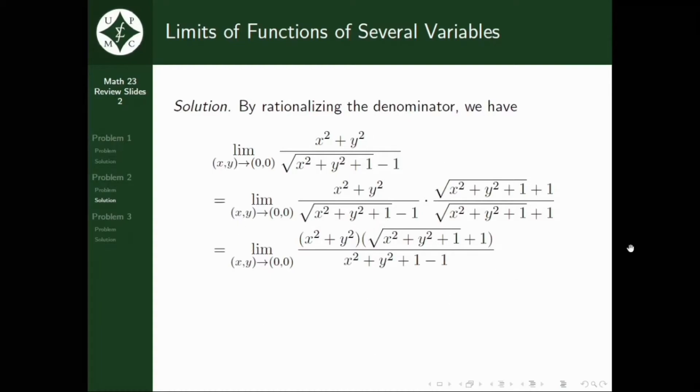So, by simplifying further, we have this expression. And now, look at this one. What happened is, this will be 0. and since the ordered pair XY approaches the origin, makacancel din further tong X squared plus Y squared. So, ang matitira na lang ay yung square root of X squared plus Y squared plus 1 plus 1. So, plugging in (0, 0), we have this thing. And simplifying further, the limit is just equal to 2.